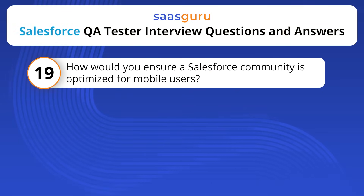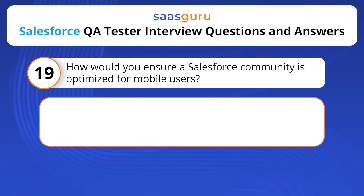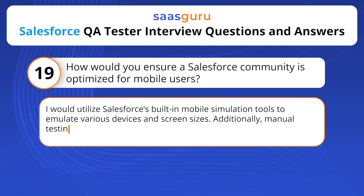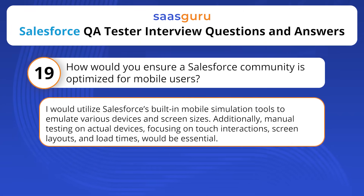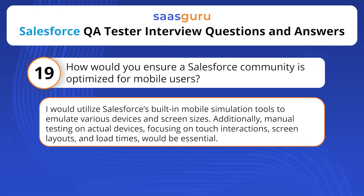How would you ensure a Salesforce community is optimized for mobile users? I would utilize Salesforce's built-in mobile simulation tools to emulate various devices and screen sizes. Additionally, manual testing on actual devices, focusing on touch interactions, screen layouts, and load times would be essential.